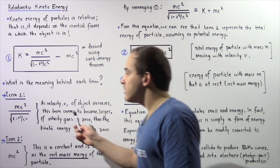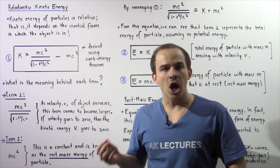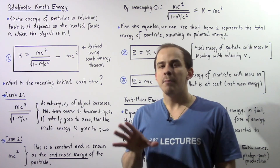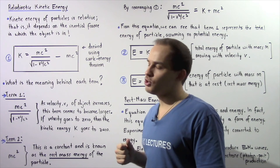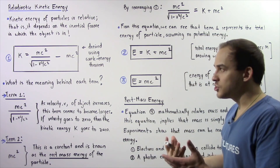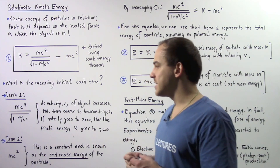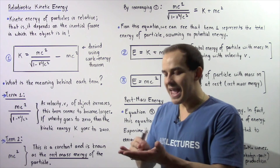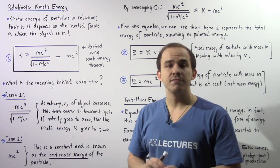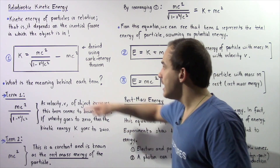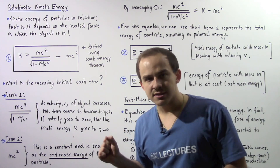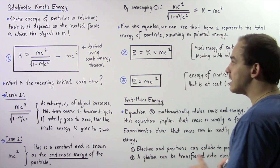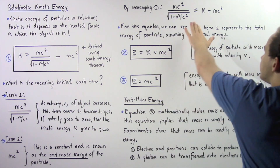As we'll see in just a moment, term number 1 actually gives us the total energy of our particle that has a mass m and a velocity v. We are not taking into consideration potential energy, so this equation does not account for gravitational or electric potential energy. Moving to term number 2: mc squared. Since m, the mass of the object, is a constant, and c, the speed of light, is also a constant, mc squared is a constant known as the rest mass energy of our particle.